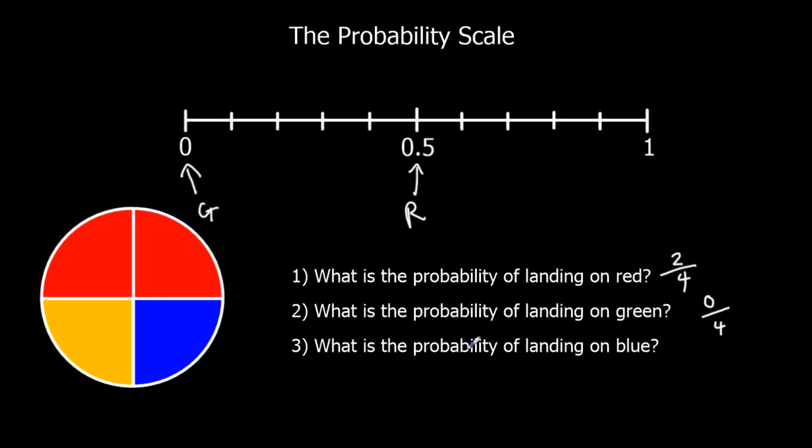And a blue—well, there's 1 blue out of 4 again. So that's a quarter, 1 out of 4, which is in the middle there. The chance of getting a blue is in there.